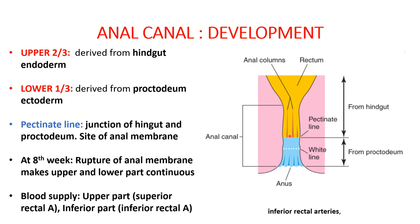The upper two-thirds of the anal canal is derived from the hindgut and the lower one-third from the proctodium. The pectinate line is the site of the anal membrane and marks the developmental junction. At the eighth week, rupture of the anal membrane occurs, making the upper and lower parts continuous to form the continuous anal canal. The upper part, derived from the hindgut, is supplied by the superior rectal artery, and the lower part is supplied by the inferior rectal artery.